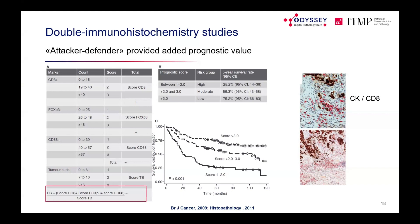The combined analysis of tumour budding and CD8 immune cells provides stratification value beyond either measure alone, echoing the immunoscore concept — which examines CD3 and CD8 at the tumour centre and invasion front. Combining budding with immune context improves prognostic stratification.